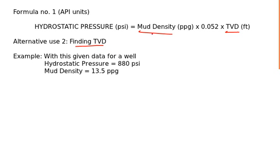This is the only thing which you can find using this formula. You cannot find MD. So this formula will give you true vertical depth. Place the values in the formula: 880 psi on the left hand side, then mud density 13.5 ppg multiplied by a constant factor 0.052 times TVD.